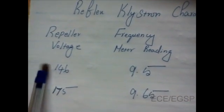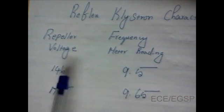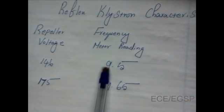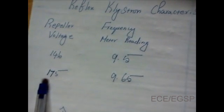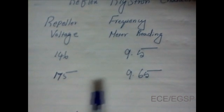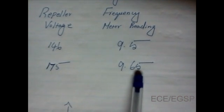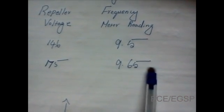For repeller voltage 146, there is a dip in the CRO at a frequency range of 9.5. For repeller voltage 175, there is a dip in the square wave for a frequency range of 9.65.